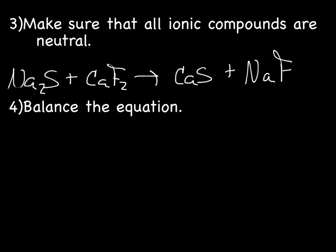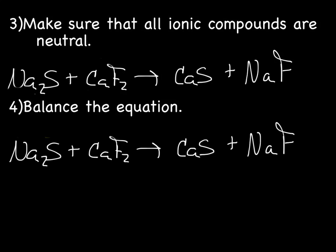And, the last step is to balance the equation. So, our atoms are Na, S, Ca, F. And, Na is on the reactant side. We have 2. And, product side, we have 1. Sulfur is on the reactant side. We have 1. And, product side, 1. Calcium is on the reactant side. 1. And, product side, 1. Fluorine is on the reactant side. 2. And, product side, 1.